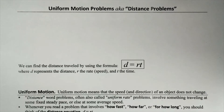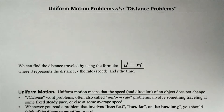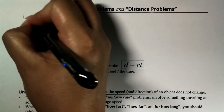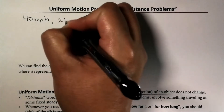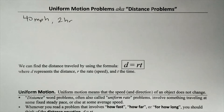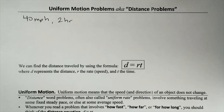Today we are going to be talking about uniform motion problems, also known as distance problems. Before we get to our first word problem, let's share some information. Let's say I'm speeding down the freeway at 40 miles an hour, and I drove at that rate for two hours. How far did I drive? In a heartbeat, you can tell me 80 miles.